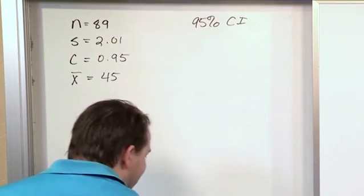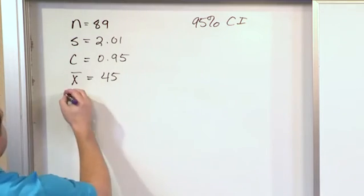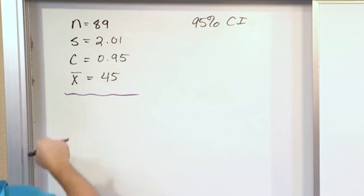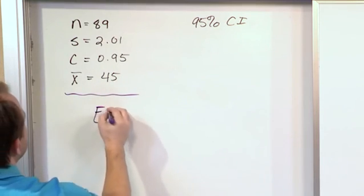So in order to proceed, we need to calculate the margin of error. Because what we're going to do is use the average value we get back as the point estimate, and we'll go plus or minus with our margin of error.